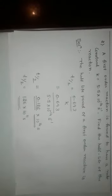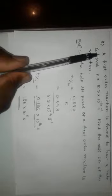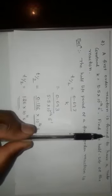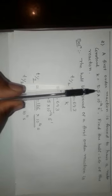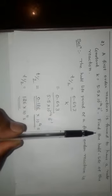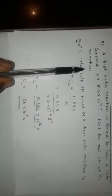Dear students, the next problem is: a first-order reaction is found to have a rate constant k equal to 5.5 into 10 to the power of minus 14 per second. Find the half-life of the reaction.